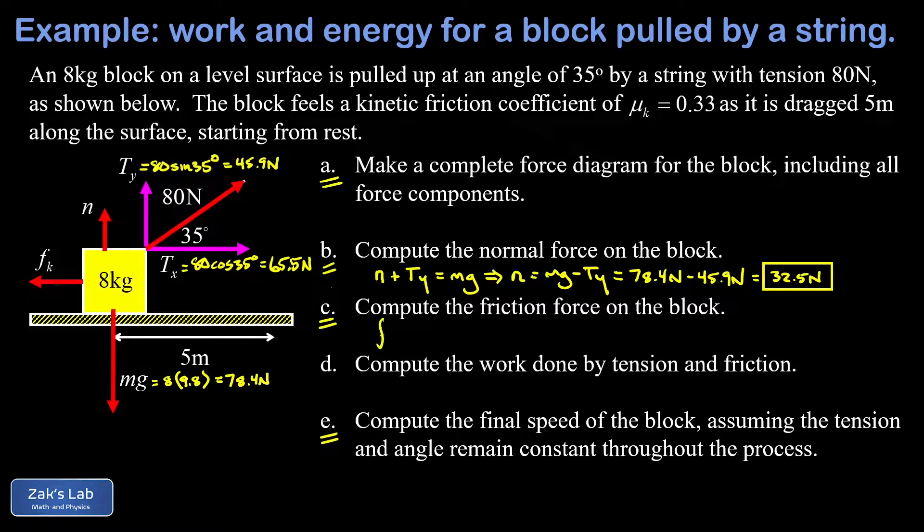Next we're asked to get the friction force on the block. This kinetic friction force is given by the coefficient of kinetic friction multiplied by the normal force, which we just computed. If I just sub in my coefficient of kinetic friction that was given in the problem as 0.33, my normal force then is 32.5 newtons, and I've got my friction force which to three significant digits turns out to be 10.7 newtons.